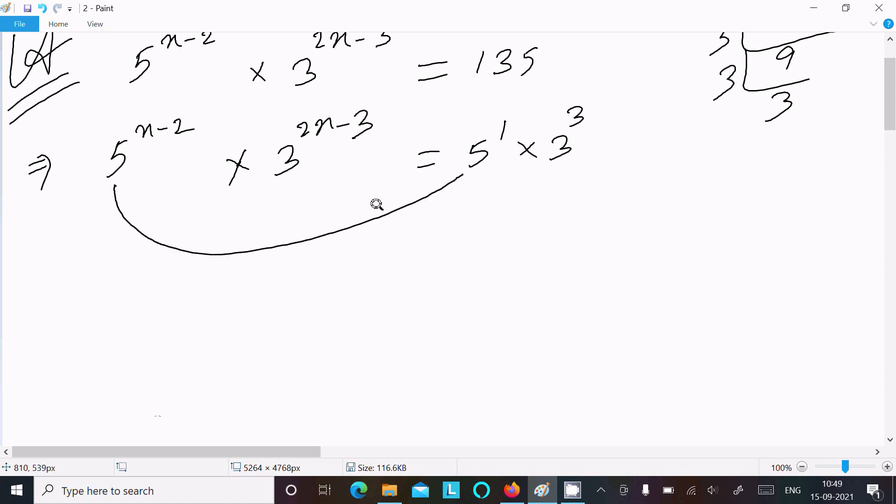So 5 equating with 5 and 3 equating with 3. Now here, 5 base is the same, so equate the power. So x minus 2 is equal to 1, and here 2x minus 3 is equal to 3.